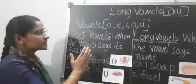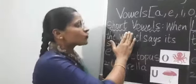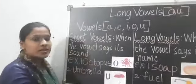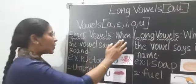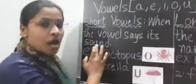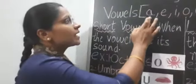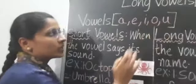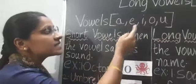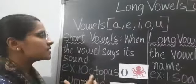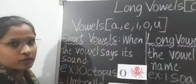So let's see what is the difference between short vowels and long vowels. What do you mean by short vowels, children? When the vowel says its sound — means when A, E, I, O, U in the word says its sound — then it is a short vowel.